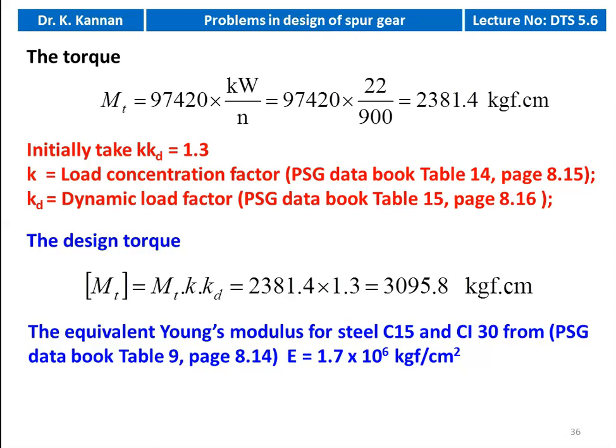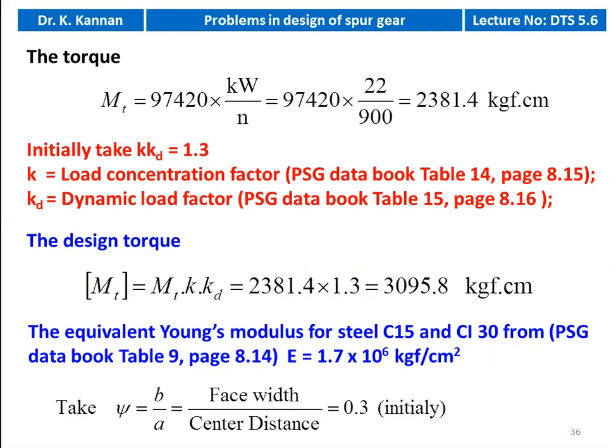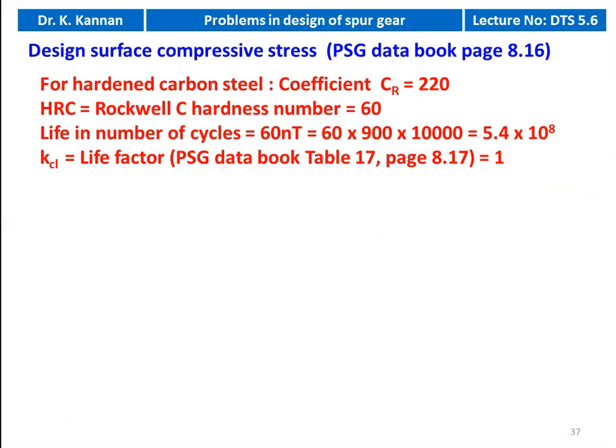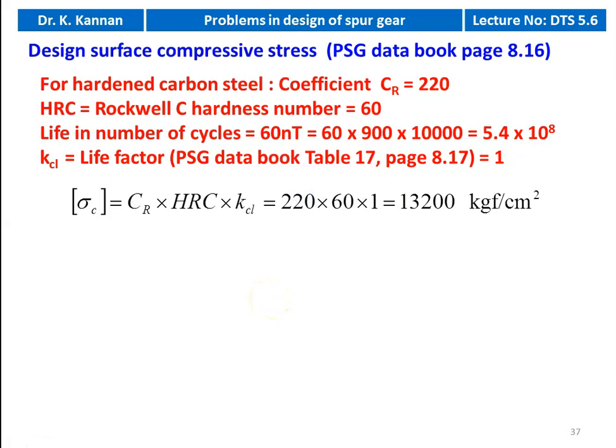We take the equivalent elastic modulus for the combination of C15 and cast iron grade 30 from the PSG data book table number 9: E = 1.7 × 10⁶ kgf/cm². We take ψ = 0.3. For hardened carbon steel C15, coefficient CR = 220 and Rockwell C hardness HRC = 60. Life in cycles = 60 × 900 × 10,000 = 5.4 × 10⁸. Life factor from table number 17 = 1 for life > 10⁷ cycles. Design compressive stress σC = CR × HRC × KCL = 220 × 60 = 13,200 kgf/cm².